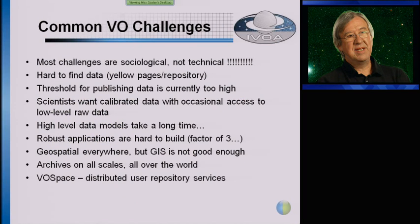The coming challenges turn out to be primarily sociological and not technological. How do we get all these different organizations and countries to share data? Even the simplest things — like how to find data — were not well defined. Google is good for keyword search, but it won't run a geospatial search on astronomical data. So we have to build essentially a yellow-pages repository service that is also location-aware and understands the specifics of astronomy. And if an astronomer wants to publish their data today, the threshold is still too high — too complicated — and we have yet to come up with a simple solution.